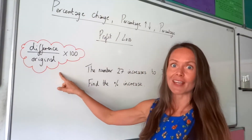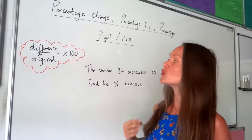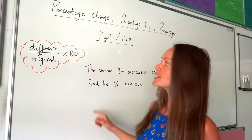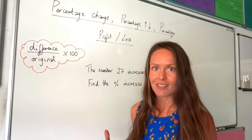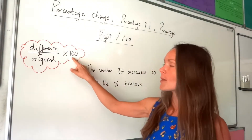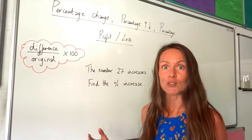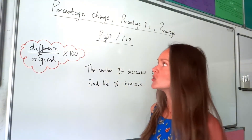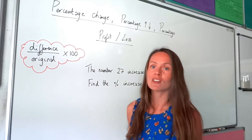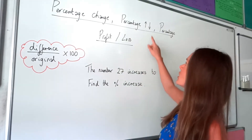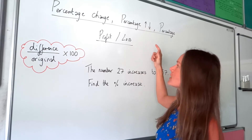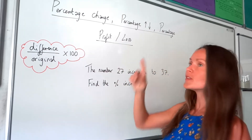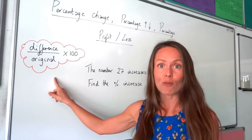So this is the formula over here to work out percentage change. You have to find the difference between the two numbers in the question, divide by the original starting value, and then multiply by 100 to turn your answer into a percentage. This formula works out percentage change, so you can use it for questions talking about percentage increase, percentage decrease, percentage profit, and also percentage loss. For all of these questions we use this formula.